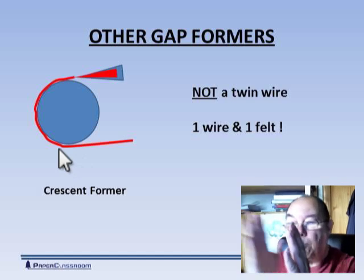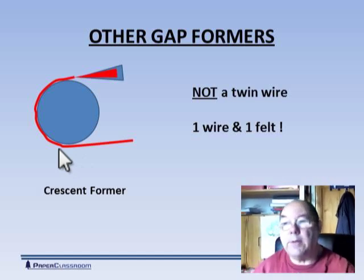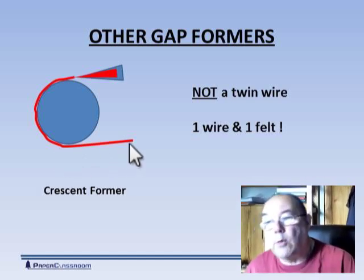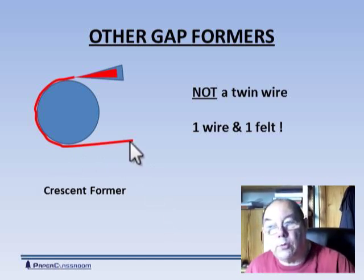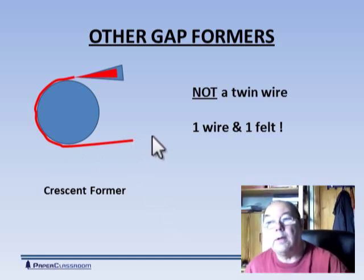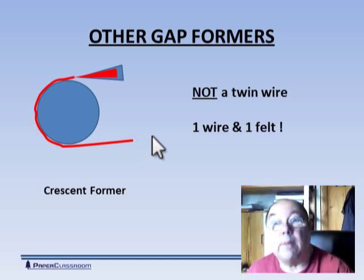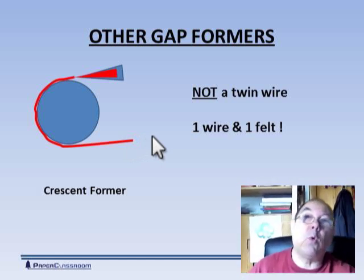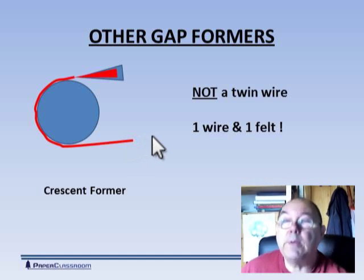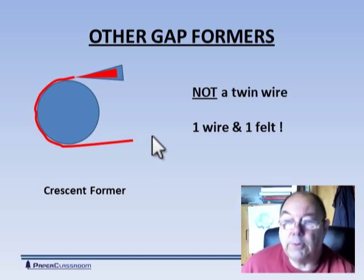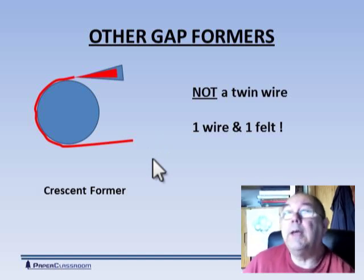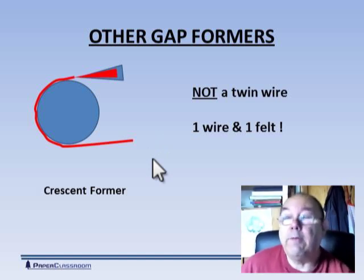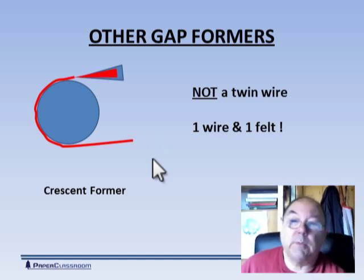The wire presses against the sheet, that's how we get the dewatering. It comes off here, the wire falls away, and the tissue is then stuck to the press fabric and it can then go on to the next section without having to be transferred. So it's understandable why this type of technology is taking over away from the S formers and C formers.